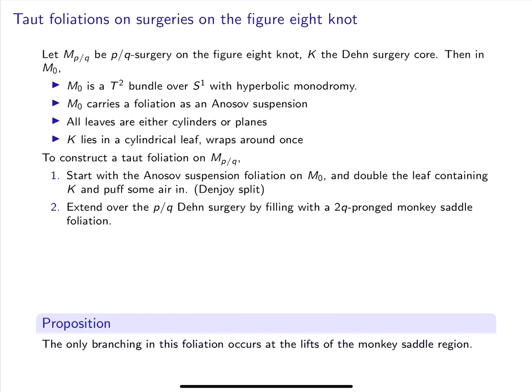The fact that we'll need to construct foliations on surgeries on the figure 8 knot is that the Dehn surgery core in M₀ lies inside a cylindrical leaf, and it wraps around the leaf exactly once. To construct the taut foliation on M_{P/Q}, we start with this Anosov suspension foliation on M₀, and we'll double the leaf containing the Dehn surgery core and puff some air in. Let me draw a picture of that. So here's the leaf λ containing the Dehn surgery core. λ is cylindrical, and here's the Dehn surgery core. We puff some air in after doubling λ, and we get a picture like this.